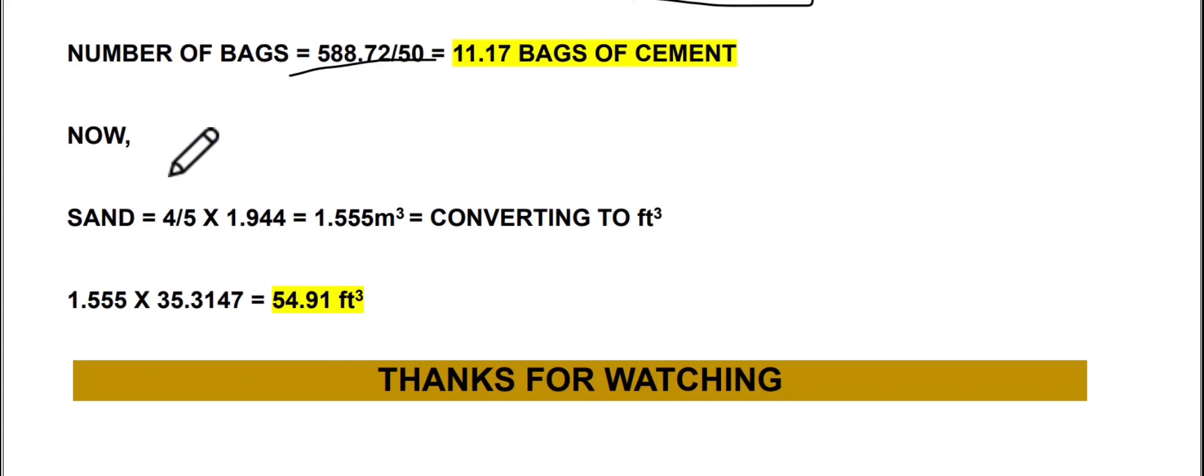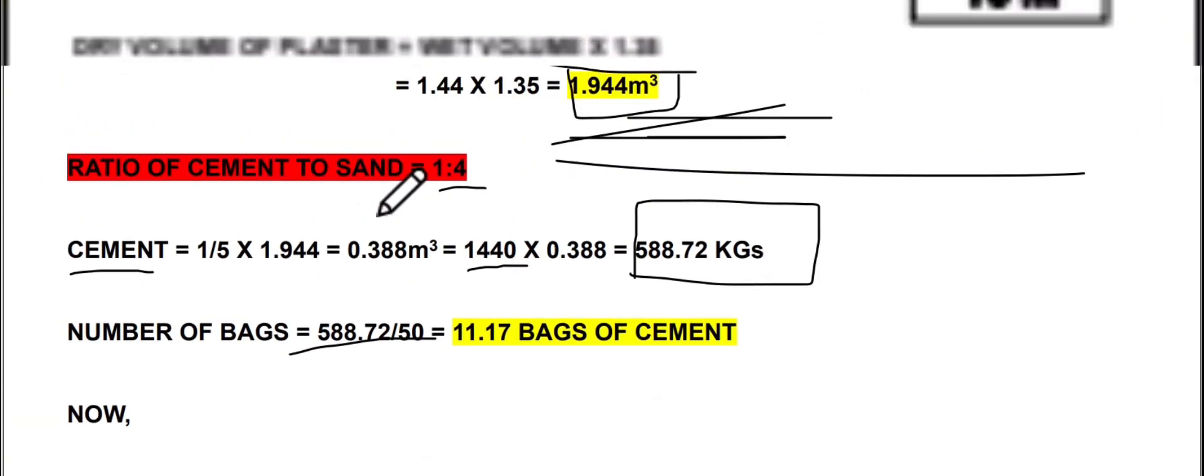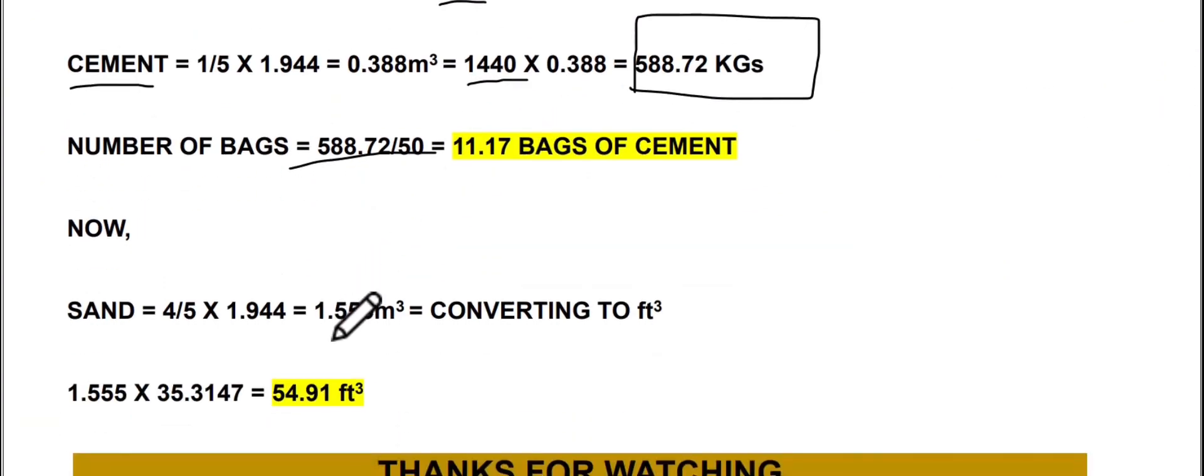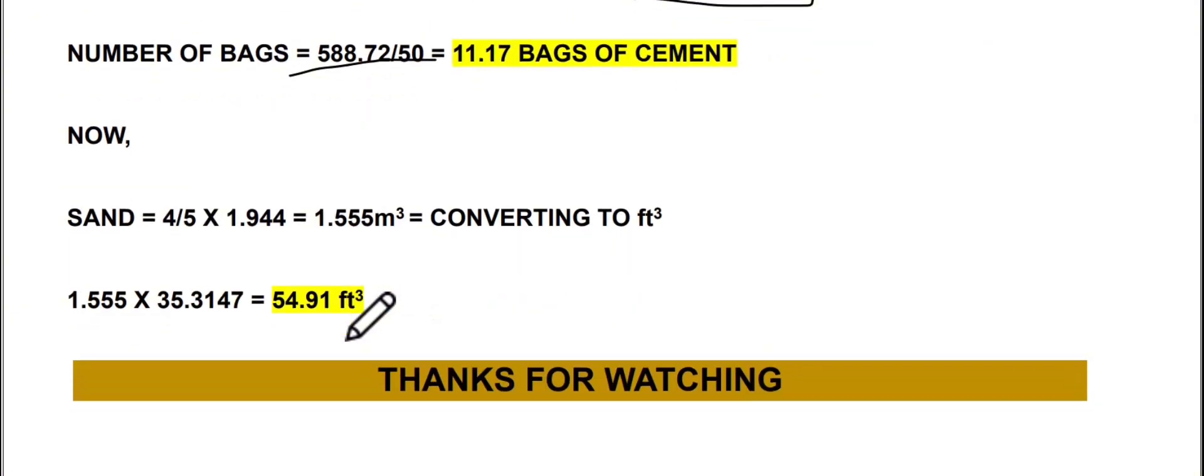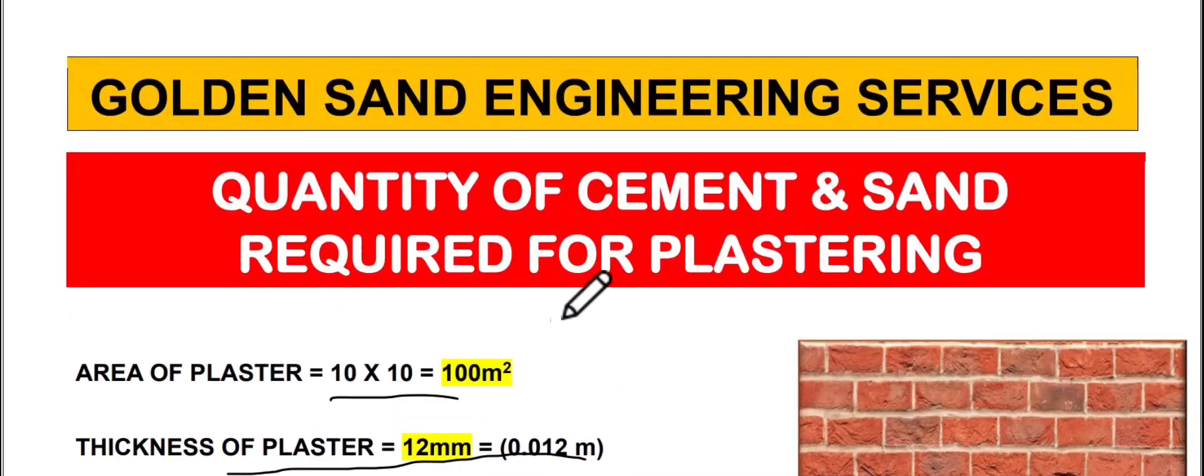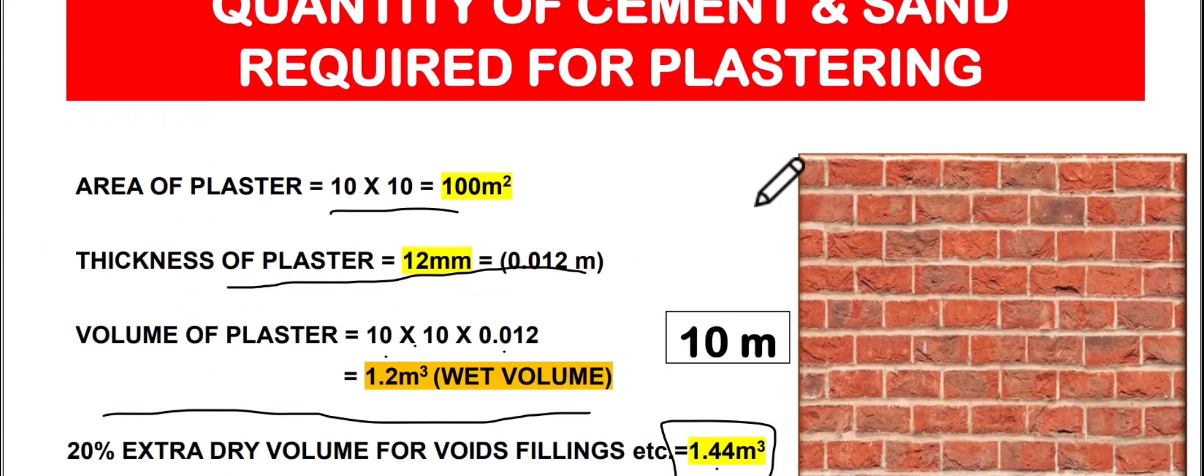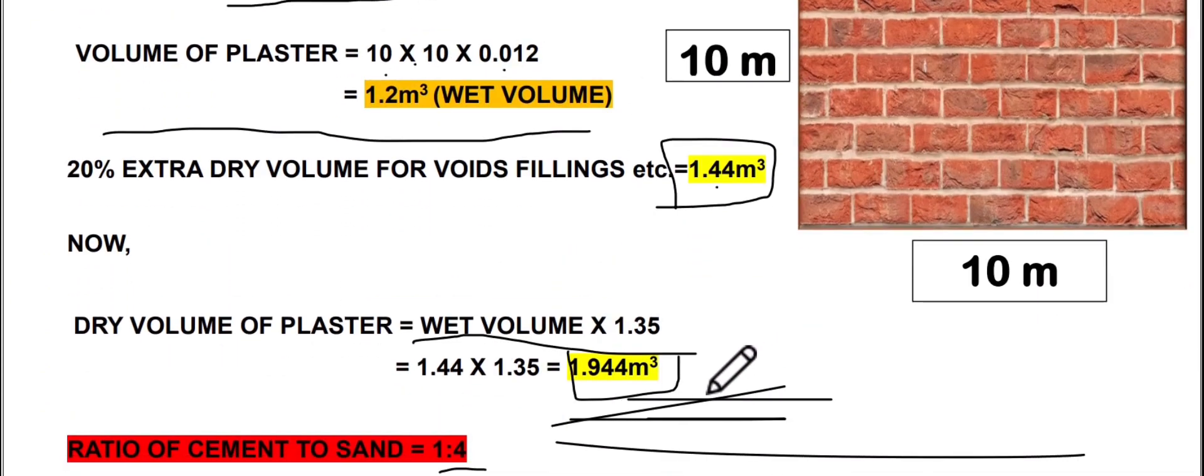Next part, sand. Sand ratio was 4, so 4 upon 5 multiply by 1.944, that is our dry volume, is equal to 1.555 cubic meters. Now in the market when we purchase sand, they give it in cubic feet sometimes, so for convenience we convert cubic meters to cubic feet. So the answer 1.555, multiply by 35.3147 is equal to 54.91 cubic feet.